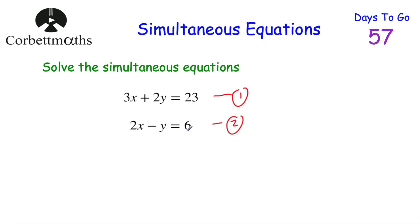If we multiply equation 2 by 2, we would get minus 2y. And 2y plus minus 2y gives us 0. So what I'm going to do is double this bottom equation — multiply equation 2 by 2.